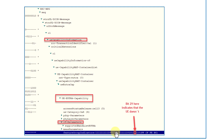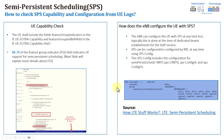For example, bit number 29 shows whether the user supports the SPS semi-persistent scheduling feature or not. If this bit is 1, it means it's supported; if 0, it does not support it. Whenever the UE is configured with SPS, the configuration is done through Layer 3 while the activation is done through the DCI information. The RRC configuration message sent at any time will have the SPS configuration for downlink and even uplink.